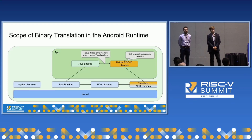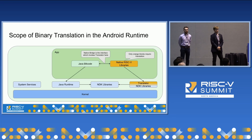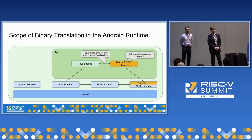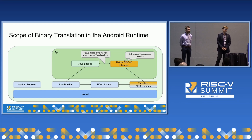As Jeremiah pointed out, we try to reduce the overhead of translation as much as possible. On this diagram, only the orange boxes are affected by translation. We only operate in user space, meaning the kernel runs natively as an x86 executable. All system services are native, the Java VM is native, and only parts of the app are being translated — not the Java part, but only the native libraries that the app is shipped with. If you bring RISC-V libraries with your app, we translate them and connect them with the rest of the system.